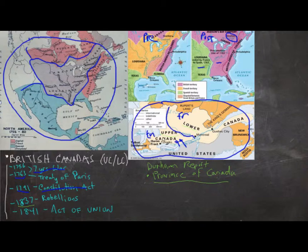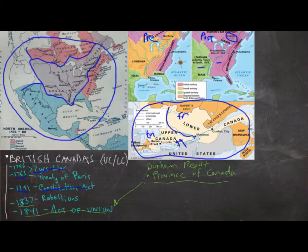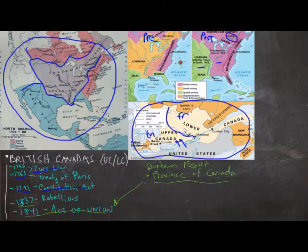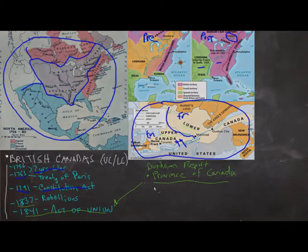Another significant outcome of the Durham Report, and ultimately what led to the implementation of the Act of Union in 1841, was that Upper and Lower Canada were given the same amount of seats, even though Lower Canada had a larger population. This was essentially an attempt by the British to slowly drown out the French influence, or at least minimize it. And this would cause conflicts moving forward — a story where we find out more about how MacDonald helped move this arrangement along.